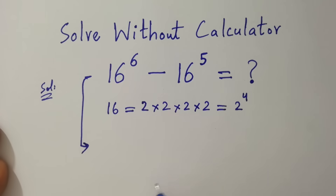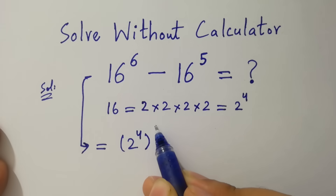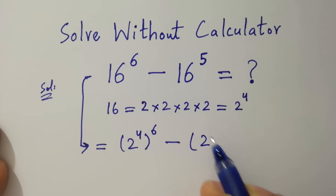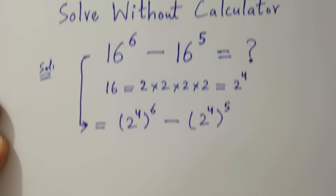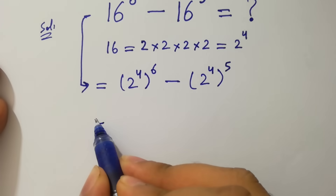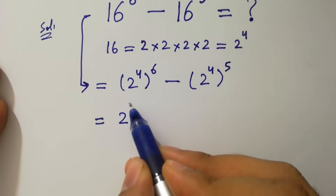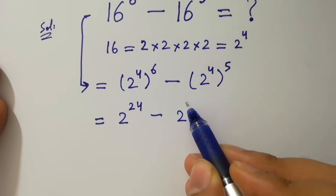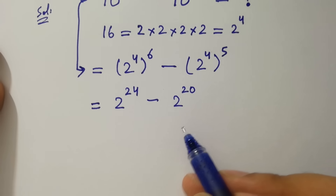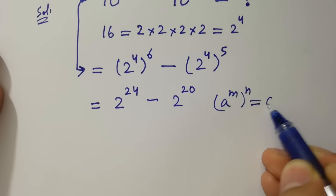Then the expression can be written as (2 to the power 4) to the whole power 6 minus (2 to the power 4) to the whole power 5. This gives 2 to the power 24 minus 2 to the power 20, since a to the power m to the whole power n equals a to the power m times n.